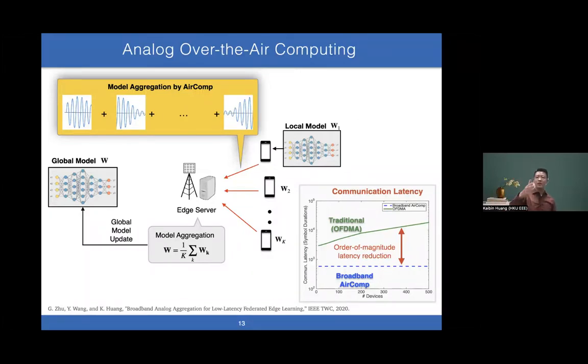The major advantage is you don't need to slice the pizza—everybody has the whole pizza and can eat it. Everyone can access the whole spectrum because this is simultaneous access. These experimental results show: vertical axis is communication latency, horizontal axis is number of devices. With traditional orthogonal access (OFDMA), latency increases linearly as devices grow. But with over-the-air computing or coded outcome—in this case broadband outcome—latency is independent of the number of devices. So with a few hundred devices, the latency reduction could be more than an order of magnitude.